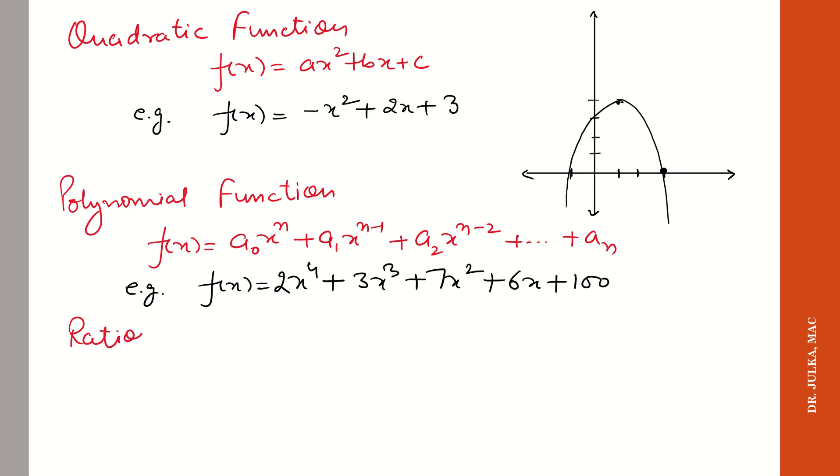Next is rational function. This is a division of two polynomial functions and is denoted by f(x) = p(x)/q(x). For example, we have a rational function f(x) = (x³ - 2x² + 5x + 1)/(x² - 7x + 4).